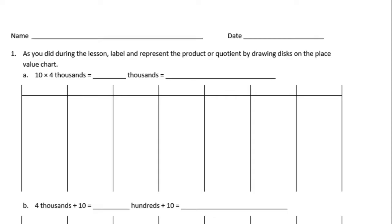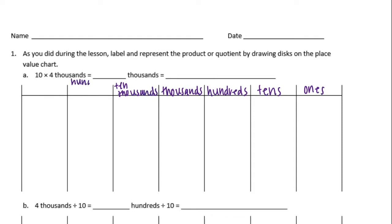So A, we have 10 times 4 thousands equals blank thousands equals what? Let's start by labeling our place value chart. Starting from the right with the ones place, we have ones, tens, hundreds, thousands, ten thousands, hundred thousands, and millions.